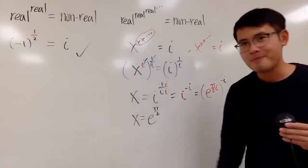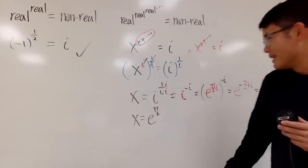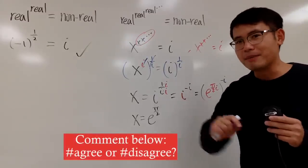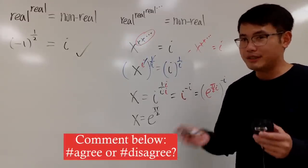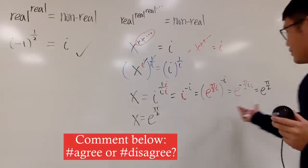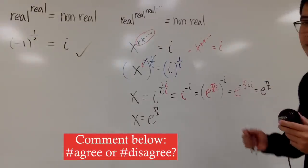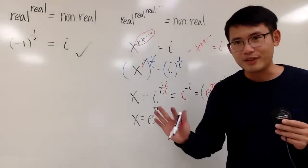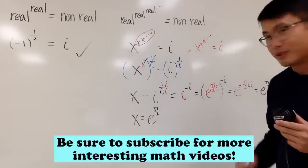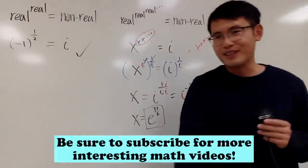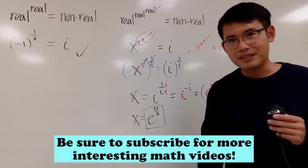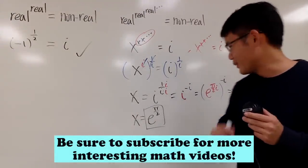So if you take e to the pi-over-2, raise it to itself, raise that to itself, on and on forever, you end up with i. You can leave a comment if you think that makes sense. In the complex world, wild things can happen! Hopefully you enjoyed this video — if you're new to my channel please subscribe, and as always, that's it.